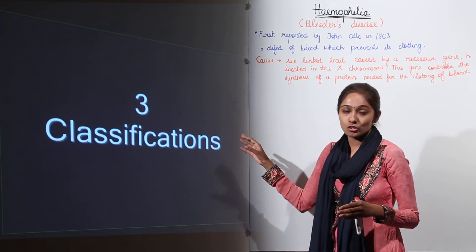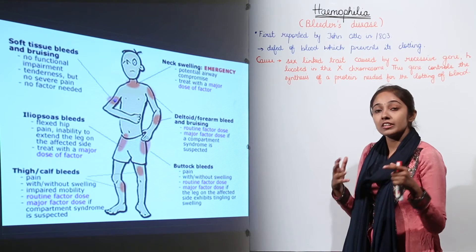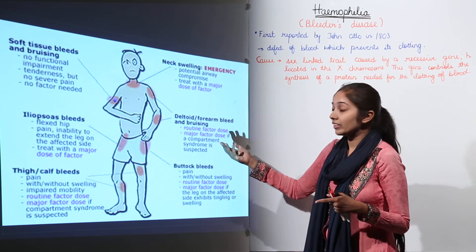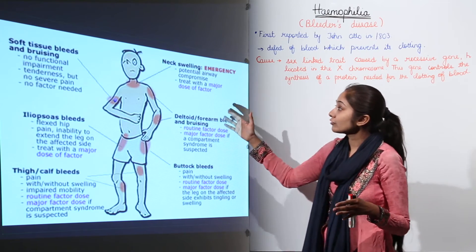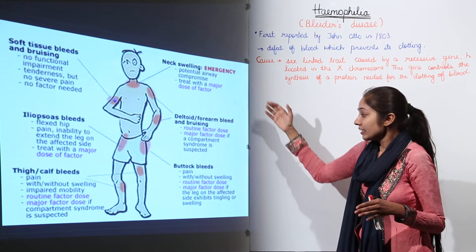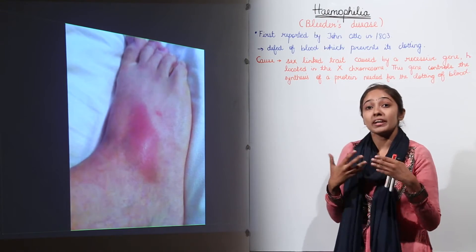There are further three classifications of Haemophilia A and Haemophilia B. If the case is very severe, if this is a very severe Haemophilic patient, so he suffers from soft tissue bleeds and bruising, neck swelling and this bleeding actually needs proper medication.